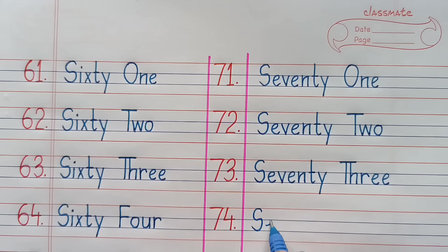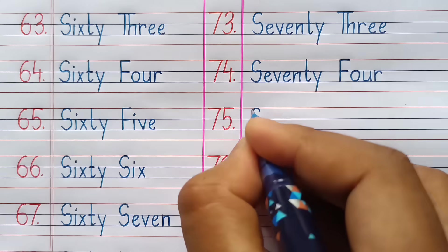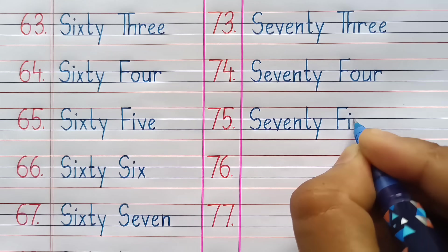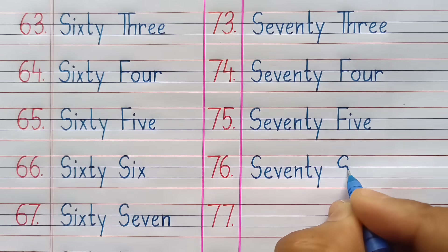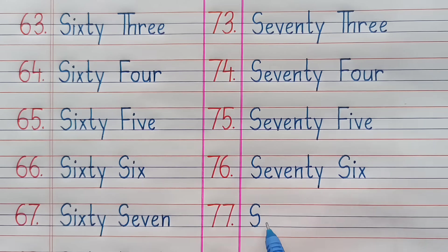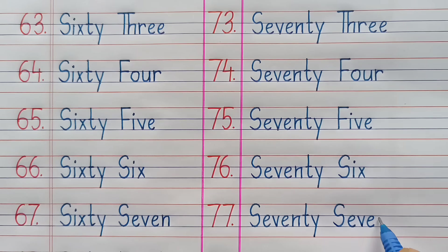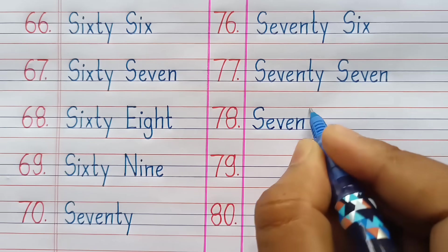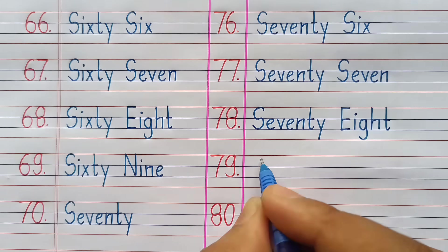70. Seventy. 71. Seventy-one. 72. Seventy-two. 73. Seventy-three. 74. Seventy-four. 75. Seventy-five. 76. Seventy-six. 77. Seventy-seven. 78. Seventy-eight. 79. Seventy-nine.